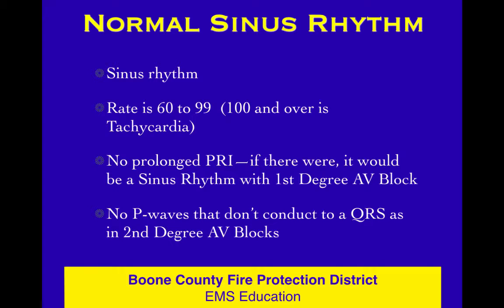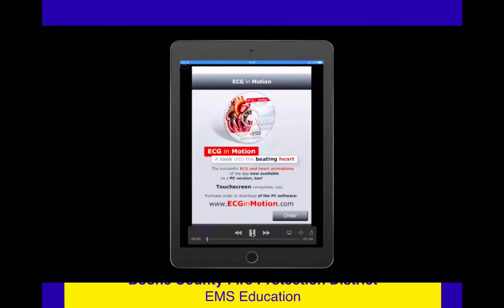Normal sinus rhythm: rate between 60 and 99, because 100 and over is tachycardia. There's no prolonged PR interval — if there were, we'd say it's a sinus rhythm with first degree AV block. Normal sinus rhythm implies the rate is normal and nothing else is weird. There's a P for every QRS, a QRS for every P, and no dropped beats. Check out ECG in motion — you really want to look at normal sinus rhythm there.